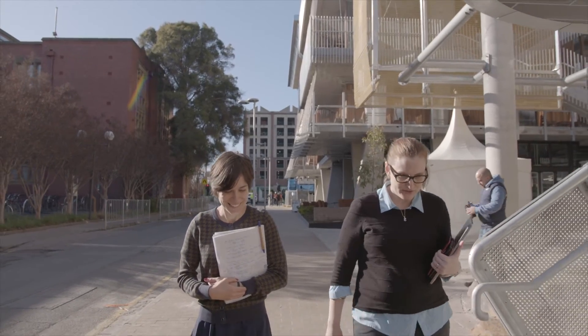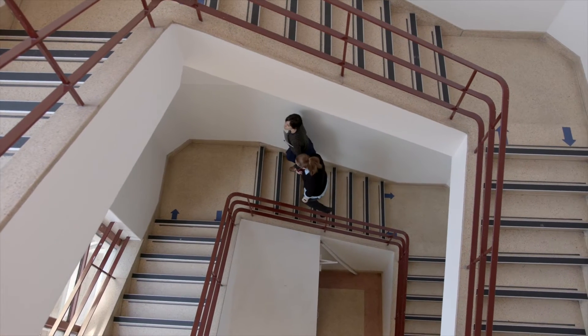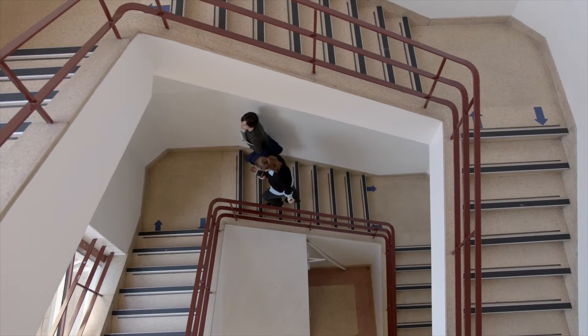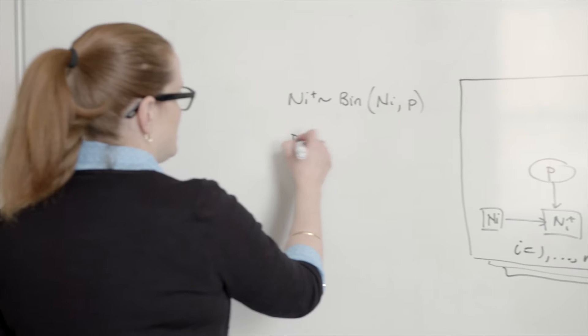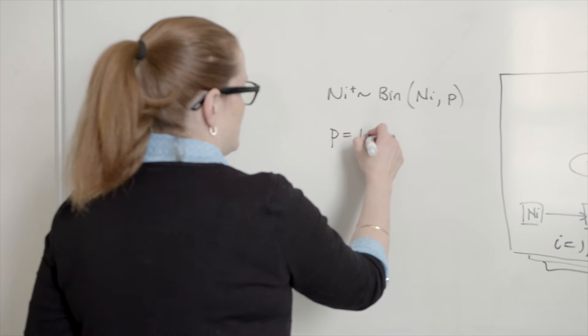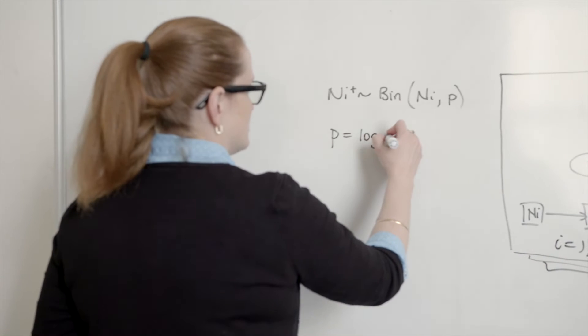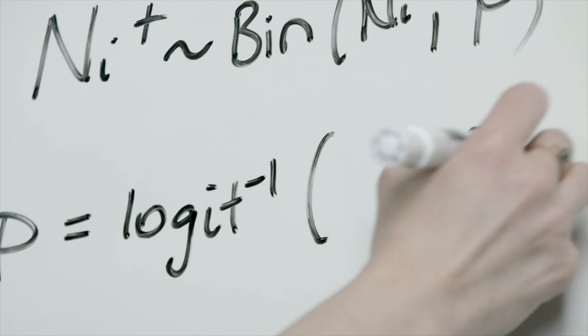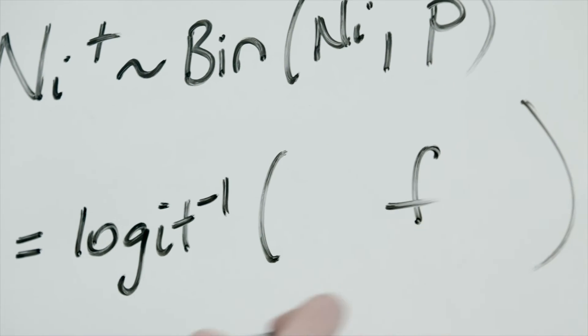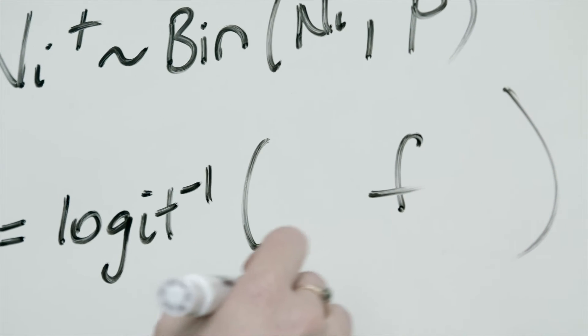Mathematical biology allows me to bring together two fields which I'm really passionate about. I'm trained as a mathematician and I love doing mathematics every day, but I also really want to know that the mathematics I'm doing has an ultimate end goal and can be useful in society.